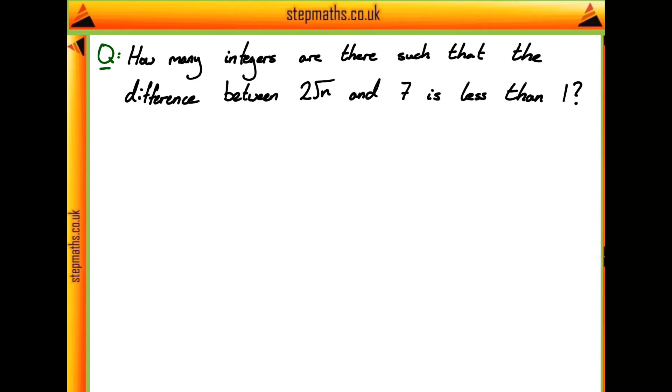To answer this question, let's begin by writing out this statement mathematically and seeing if we can make some sense of it. The difference between 2 root n and 7 is less than 1, so we can write this as the magnitude of 2 root n minus 7 is going to be less than 1.